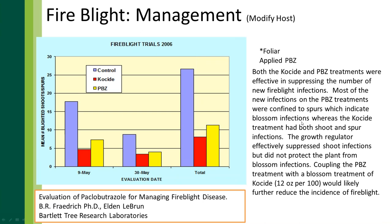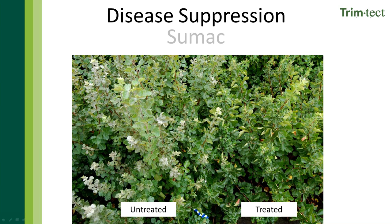Here are real-life examples of TrimTech's secondary health benefits. These are fire blight trials conducted with Bartlett Tree Experts in Charlotte, North Carolina. We had untreated trees, trees treated with copper — a commonly used fire blight management protocol — and trees treated with paclobutrazole, which would become TrimTech. Over time, we reduced disease incidence using TrimTech alone. The copper sprays performed better, but that was two sprays of copper versus just one spray with TrimTech. Another example: powdery mildew on sumac — you can see the difference between the untreated and treated plant.